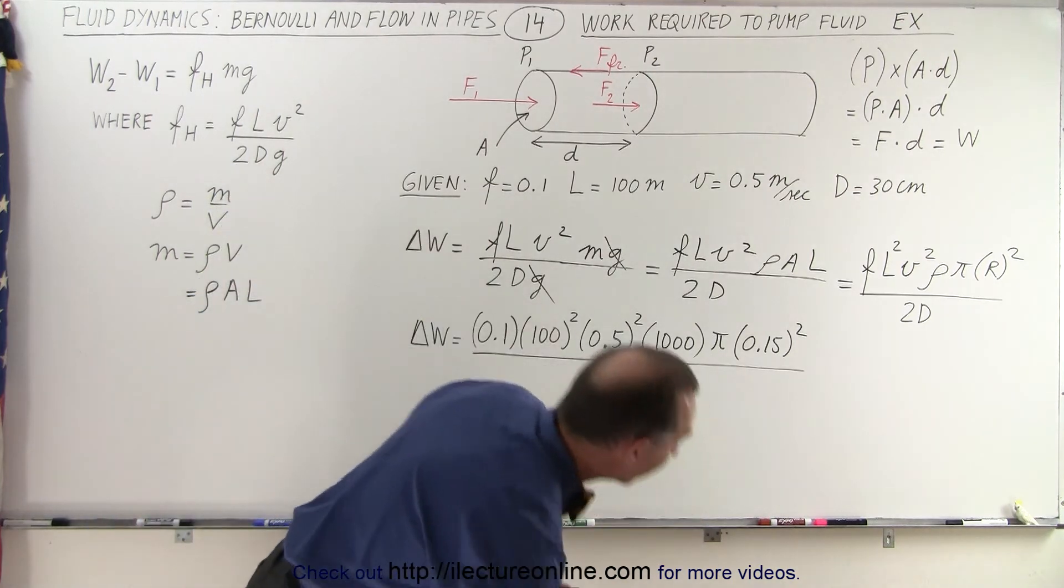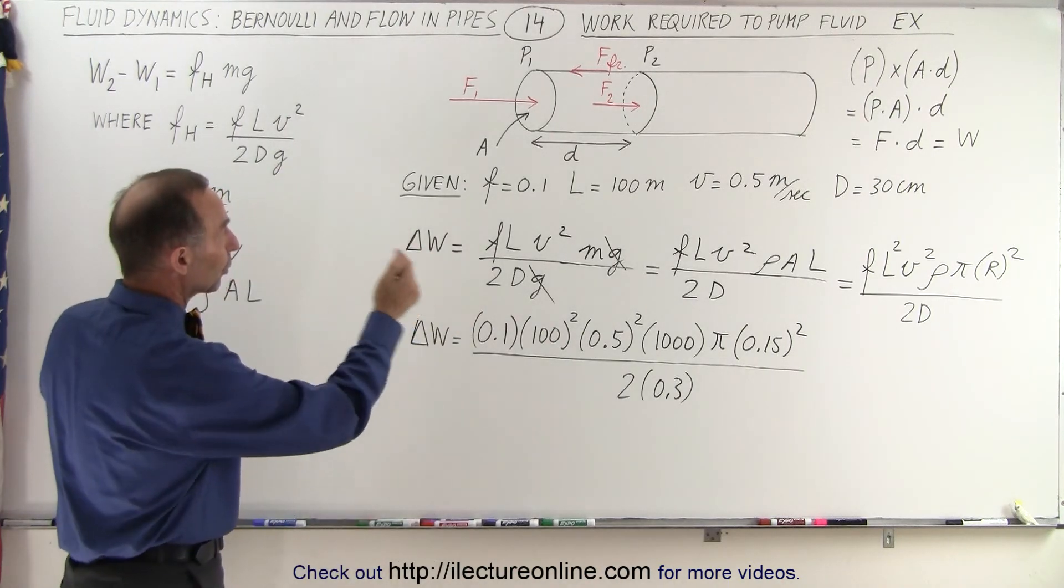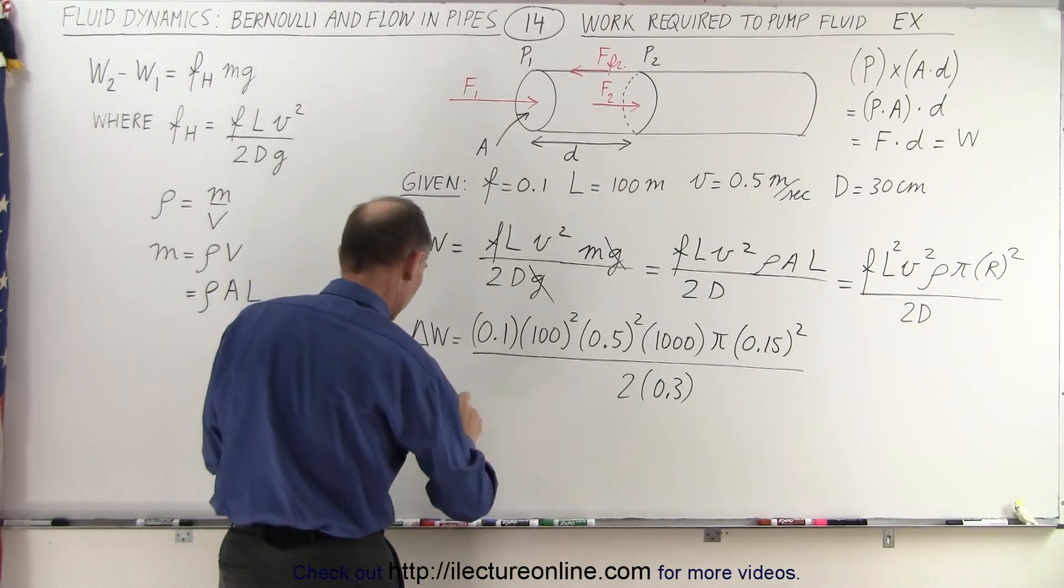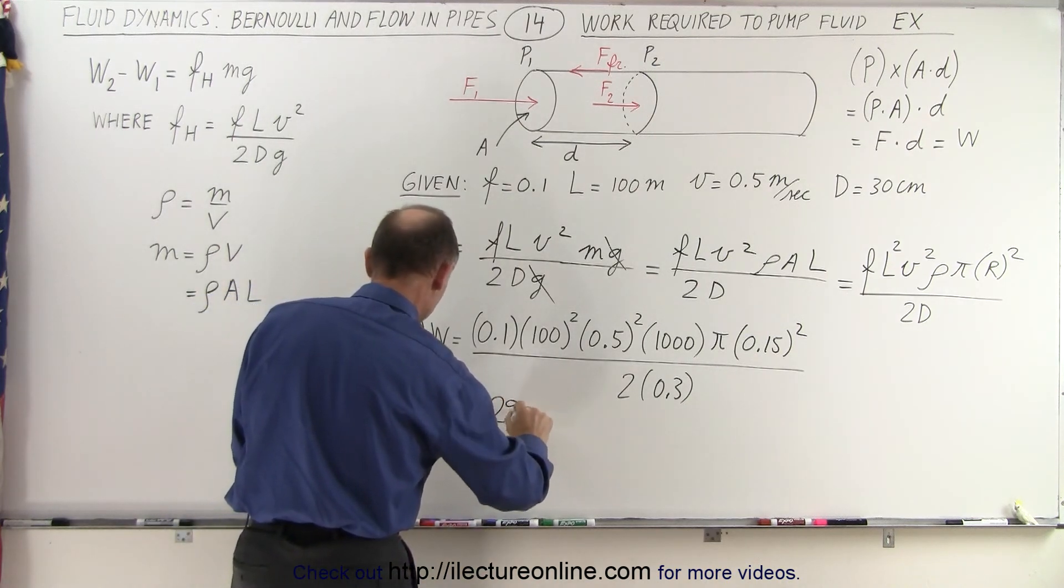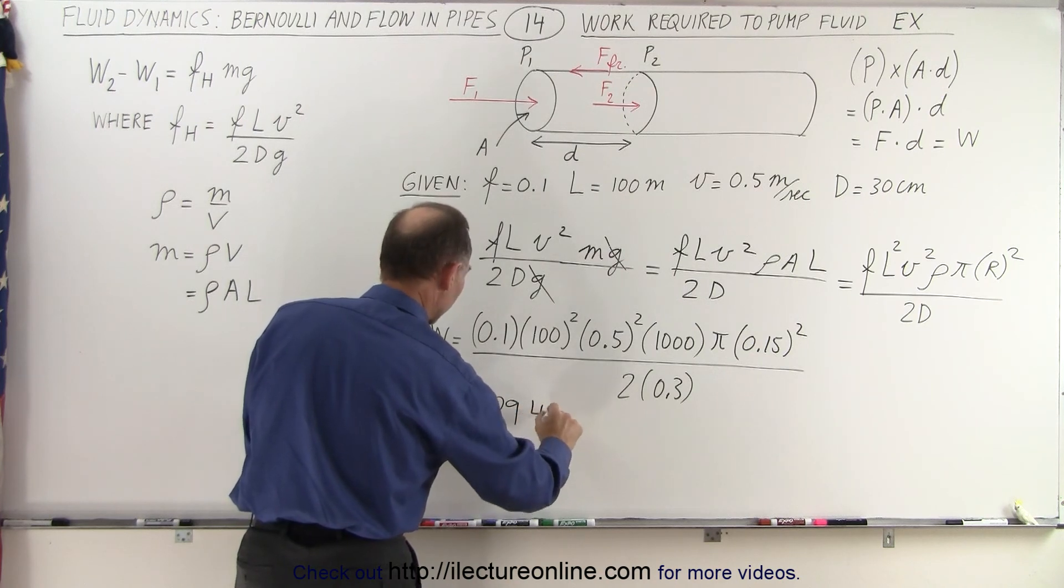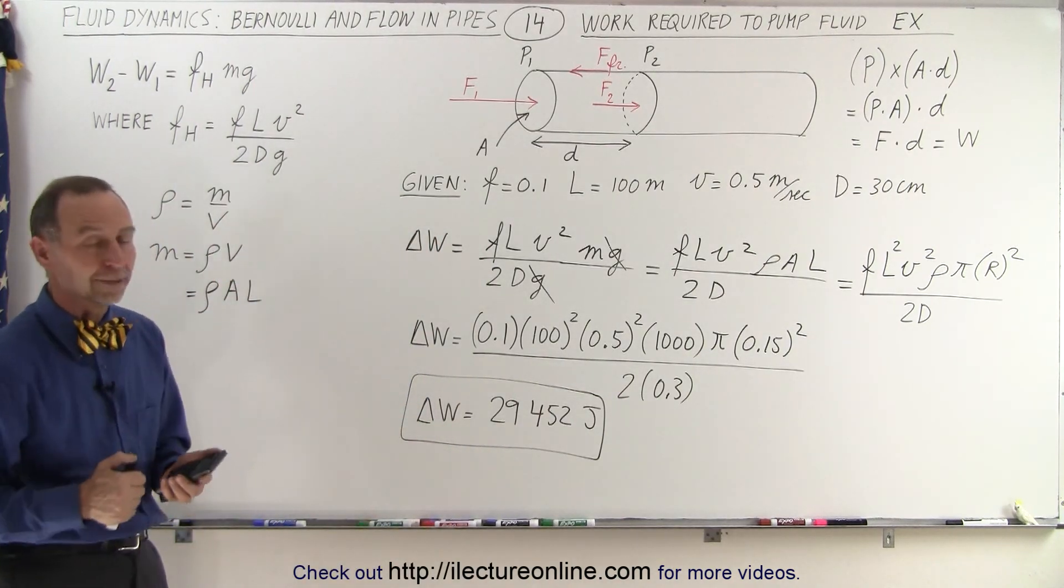equals, and the total amount of work required to move 100 meters of fluid down the pipe 100 meters would be equal to 29,452 joules. Because it's work, the answer will be in joules, and that is how it's done.